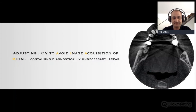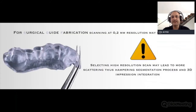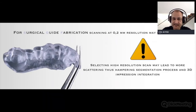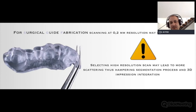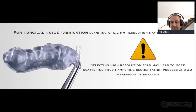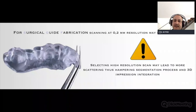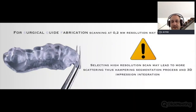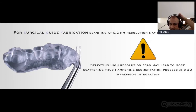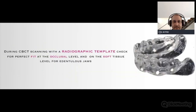Knowing that the sufficient resolution for a nice surgical guide is only 200 microns, we should adjust our resolution accordingly — not too high. We should use the minimum resolution needed to acquire our image, whether 200 or 300 microns, to minimize scattering and acquisition time. This will help us have a cleaner image and enable nicer segmentation and better integration of our 3D cast.